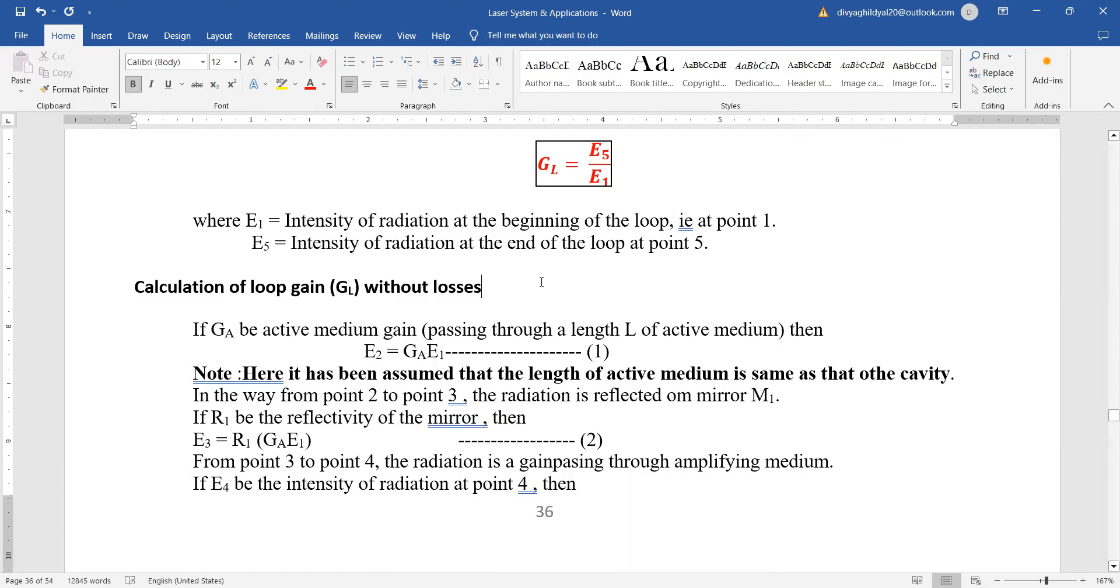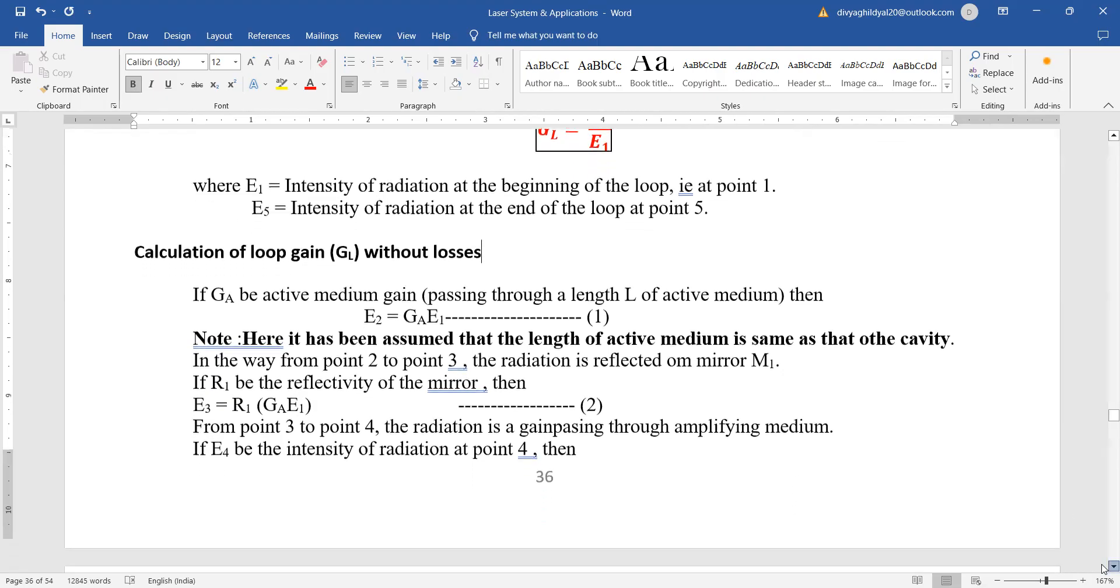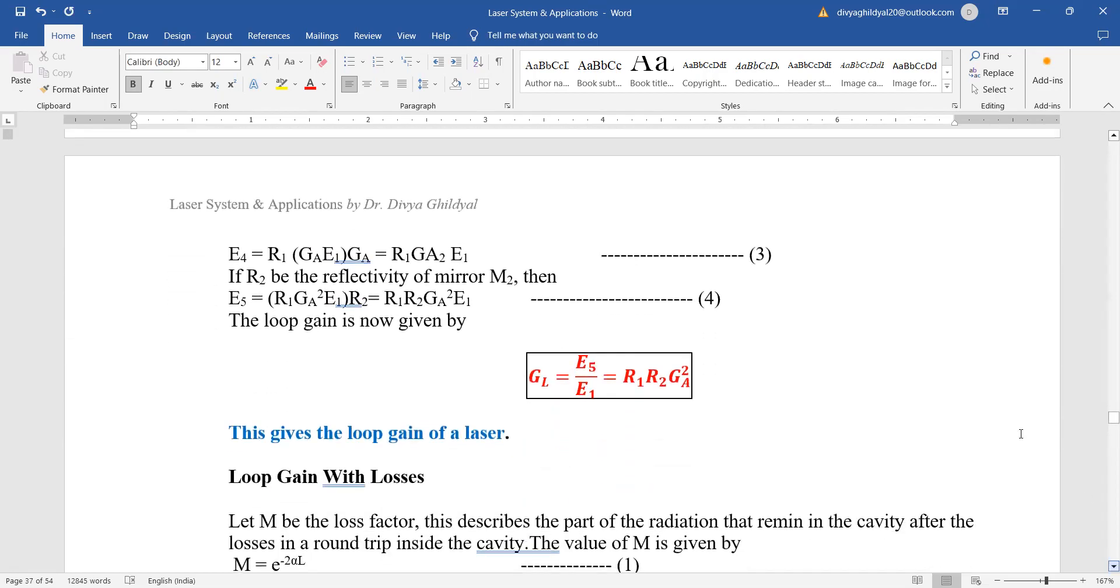Calculation of loop gain without losses. This is a derivation. It has been asked and numerical problems have also been asked on this derivation. Let GA be the active medium gain which is passing through length L of active medium. Then energy is GA times G1. Here it has been assumed that length of active medium is same as that of cavity. We put the values and get the ratio R1 R2 GA squared. This gives us the loop gain.